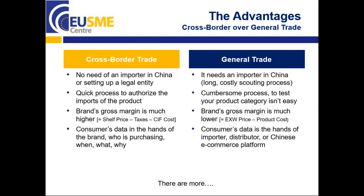To make this a very short webinar, we can start saying that there are two ways to export to China: general trade and cross-border trade. General trade is costly, it's time-consuming, it takes a long time. So we describe today a quick solution done via cross-border trade. I have compiled for viewers of this webinar all sorts of advantages of cross-border trade over general trade.